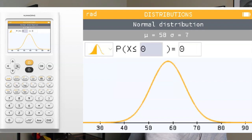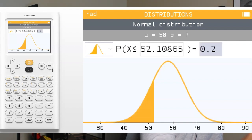But instead of entering a data value, we're going to enter in the 20%. So this is like a percentile. A percentile has the percentage of data below, so we're typing in 20% below. Hit OK, and notice it shades that area, and then it populates the X value that has 20% below it at 52.10865. Pretty awesome.